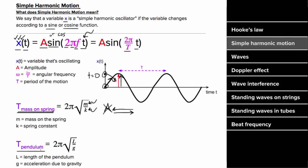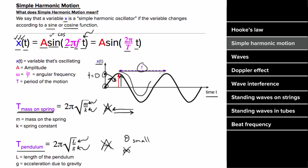The formula for the period of a pendulum — a mass swinging on a string — is two pi times the square root of the length of the string divided by the magnitude of the acceleration due to gravity. This also does not depend on the amplitude, as long as the angles are small, and it doesn't depend on the mass either. On a graph of simple harmonic motion vs. time, the interval between peaks represents the period.